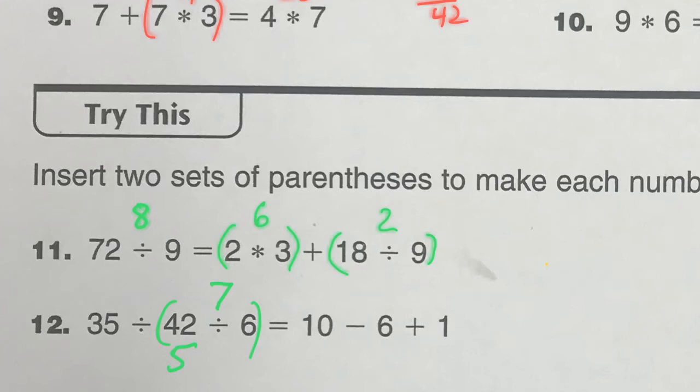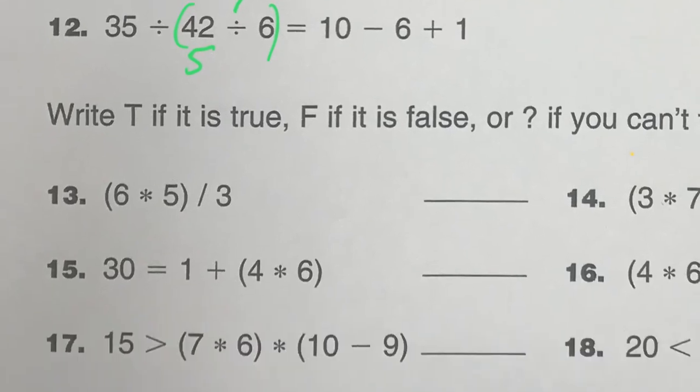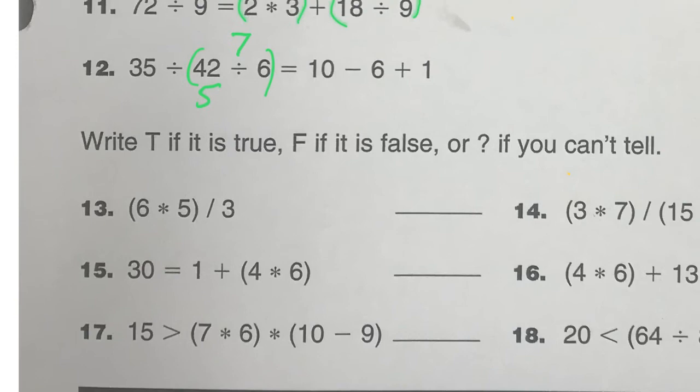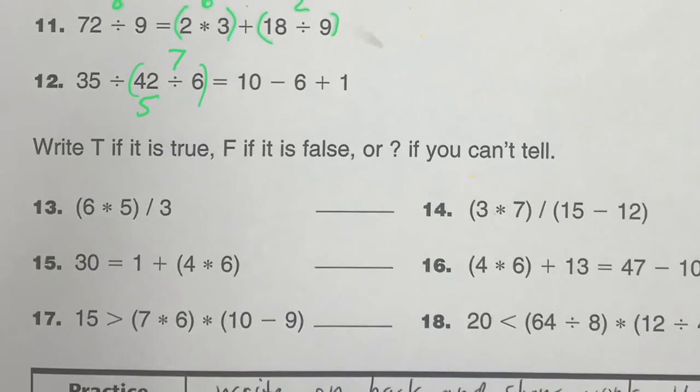Okay. Moving on. Now we're just doing true and false. So let's just do a couple here. And let's see. 6 times 5 divided by 3. There is no equal sign. There's no greater than sign. There's no less than sign. That is a question mark. We don't know if that's true or false. It needs to have a question mark or a less than. It needs to have an equal sign or a less than or a greater than. It has none of those. So that is a question mark.